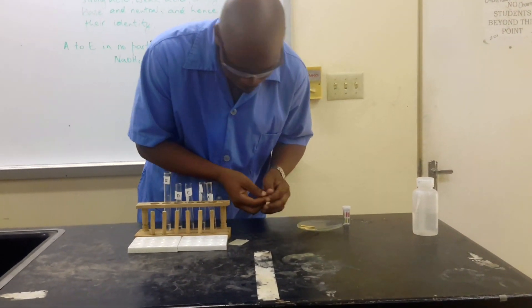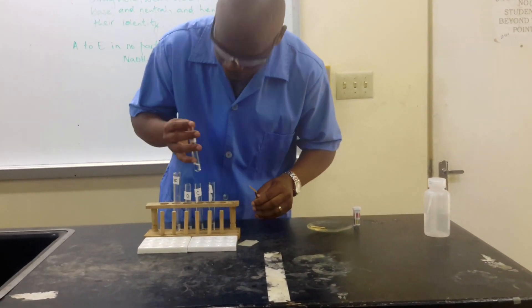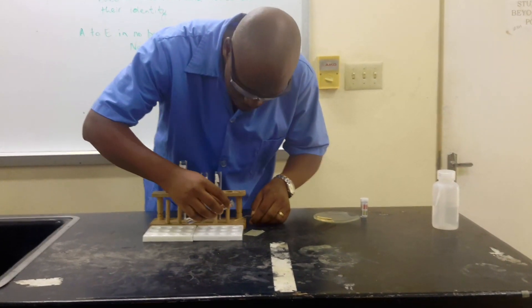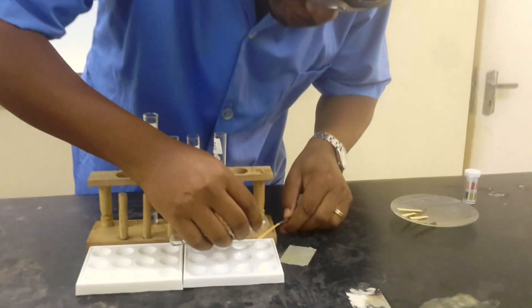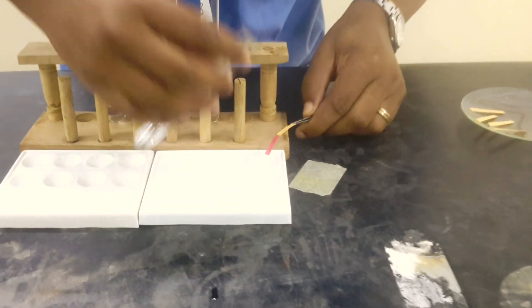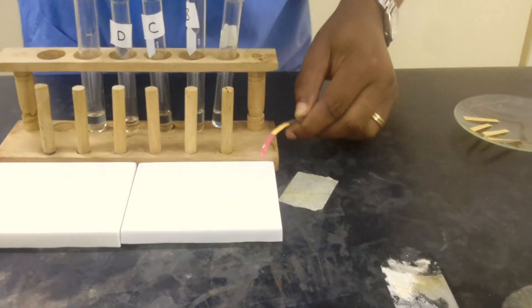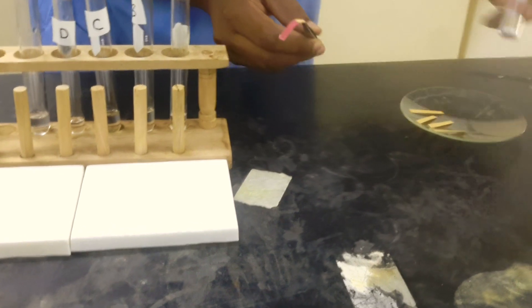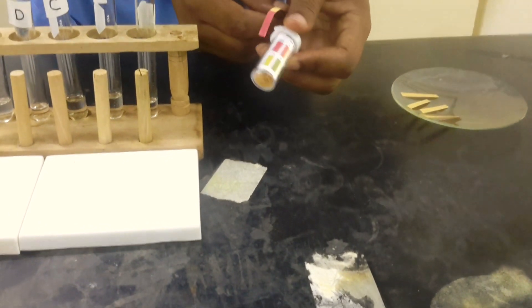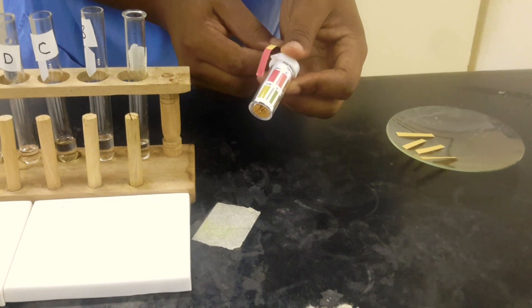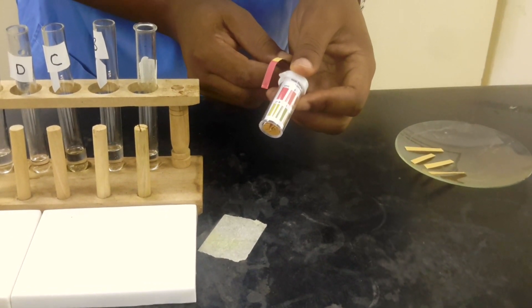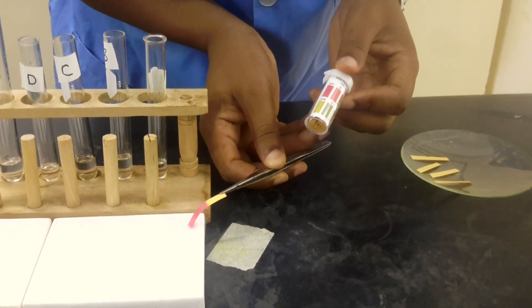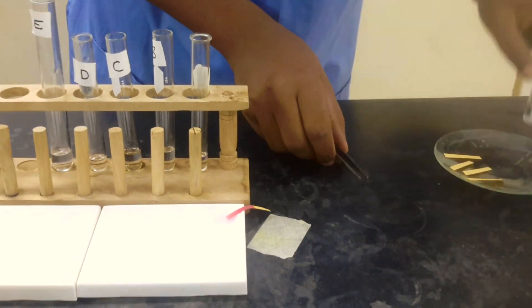We'll just take solution A and pour it onto our universal indicator paper. We'll get a color change, so we'll just take the sheet and match. The color here is corresponding with pH 1 based on that color, so we can just leave that one right there.